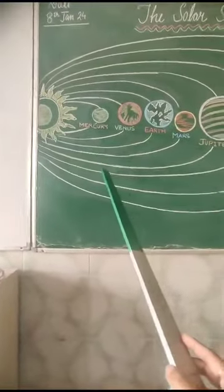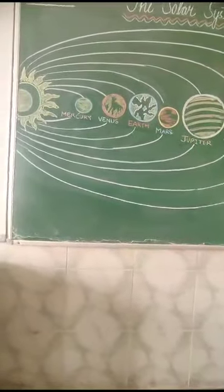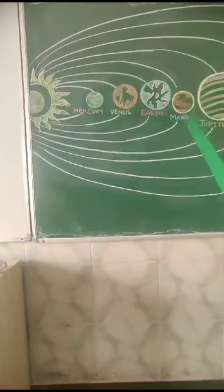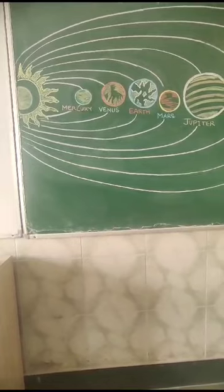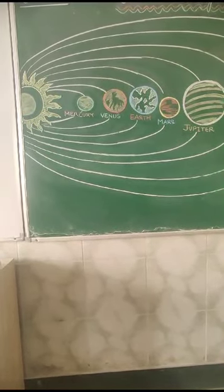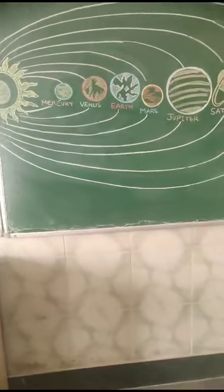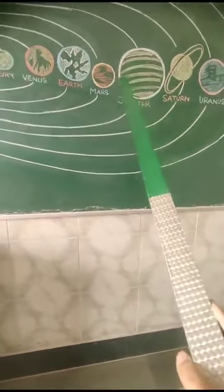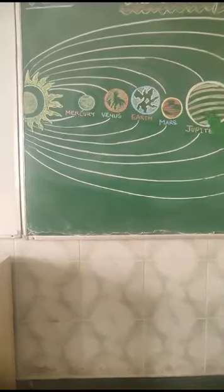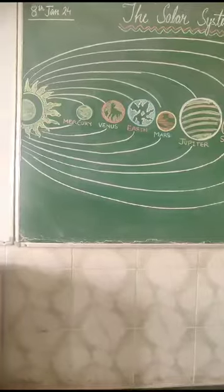Our solar system not only consists of these 8 planets with their moons, but it also includes the satellites of the planets, numerous comets, asteroids, and meteorites. Children, you will come to know about these objects as you go to higher classes.